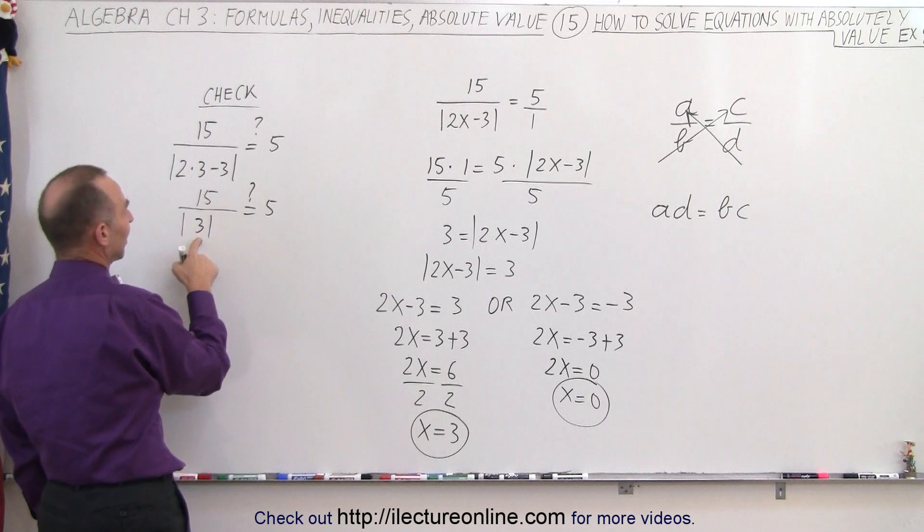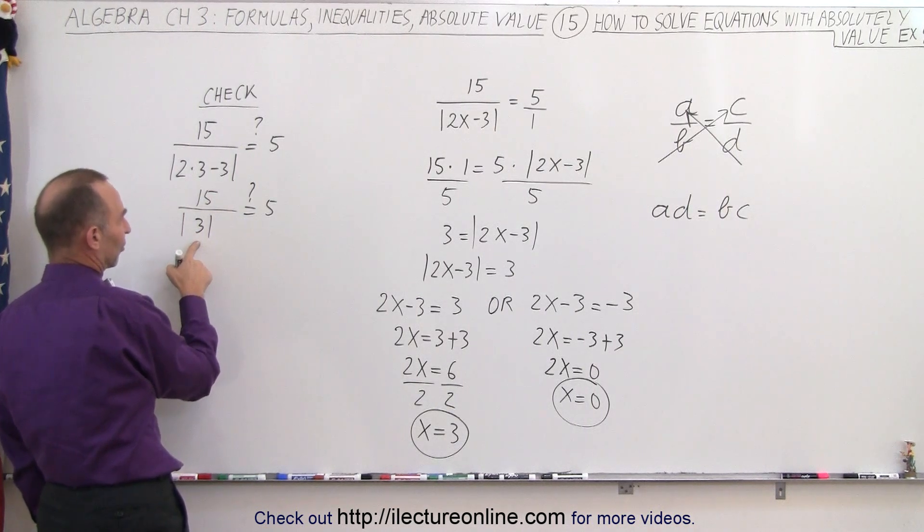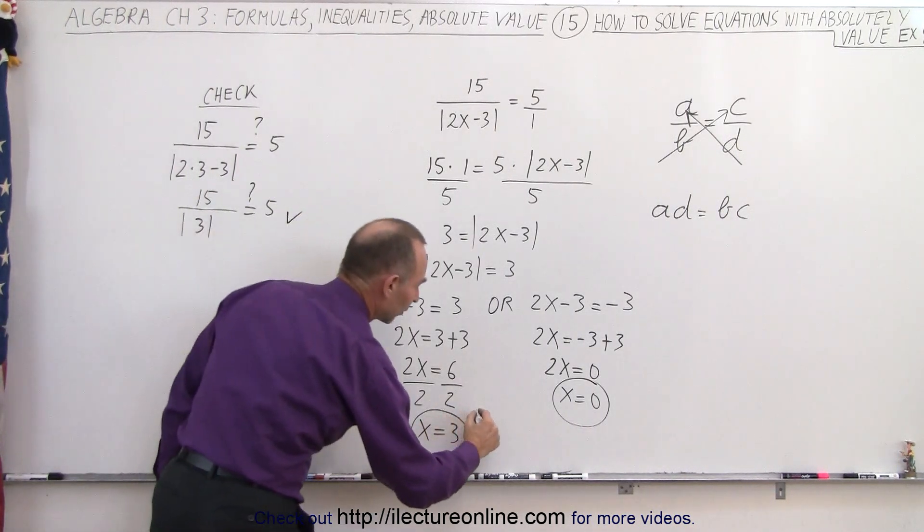And sure enough, 15 divided by the absolute value of 3, which is the same as 3, is indeed 5. So we know that this is a good solution.